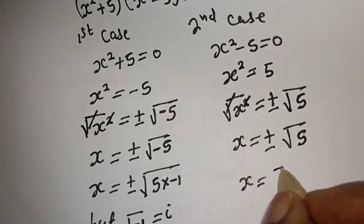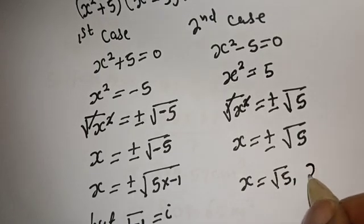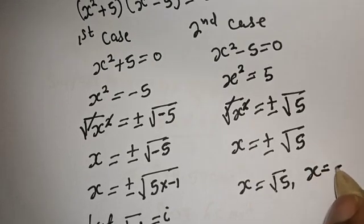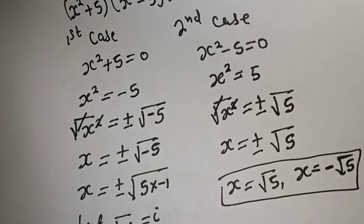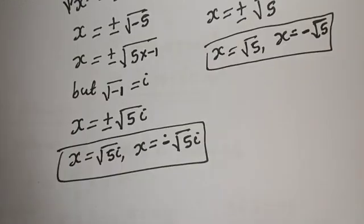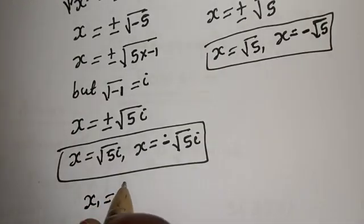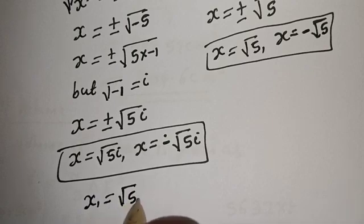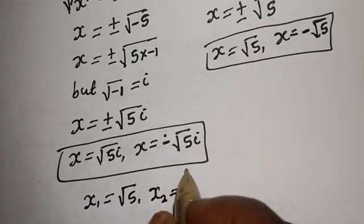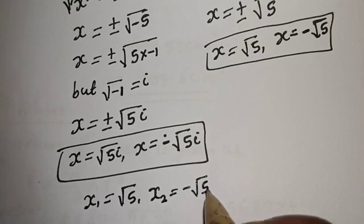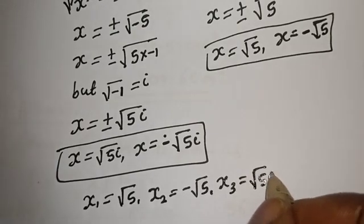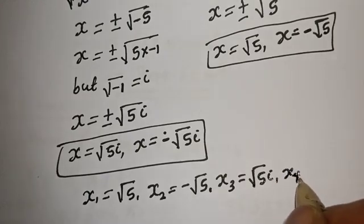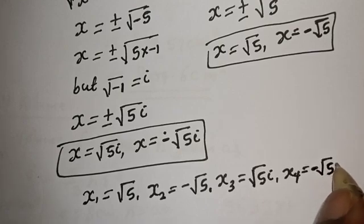For the second case, s squared minus 5 equals zero, giving s is equal to square root of 5 or s is equal to minus square root of 5. Therefore our final answers are: x1 is equal to square root of 5, s2 is equal to minus square root of 5, s3 is equal to square root of 5i, and s4 is equal to minus square root of 5i.